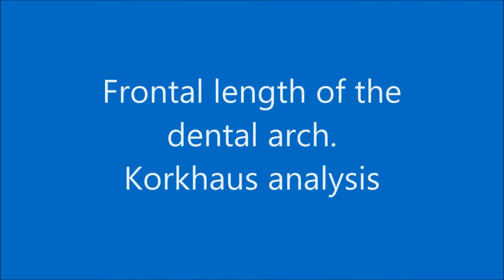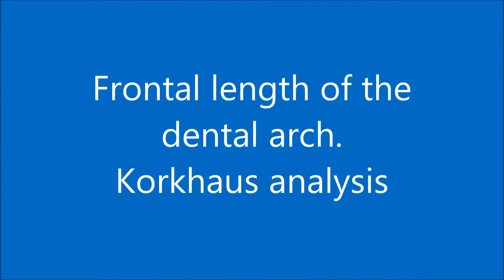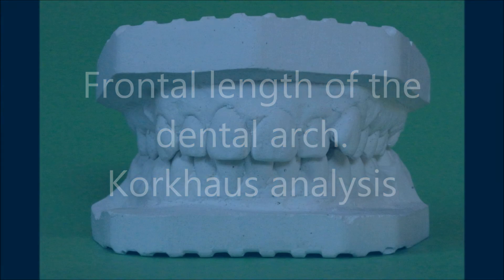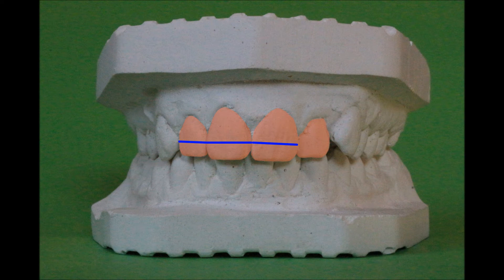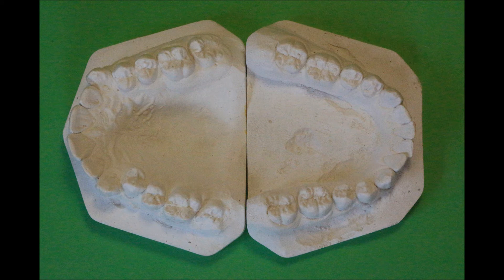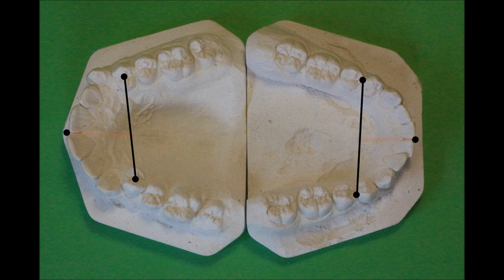Frontal length of the dental arch — Corkhouse analysis. Corkhouse found a relation between total width of 4 upper incisors and frontal length of the dental arch. Length of the frontal segment of the maxillary arch is measured from a point between the central incisors to the midpoint of the interpremolar line. These values are compared with table data in accordance with the sum of incisors.